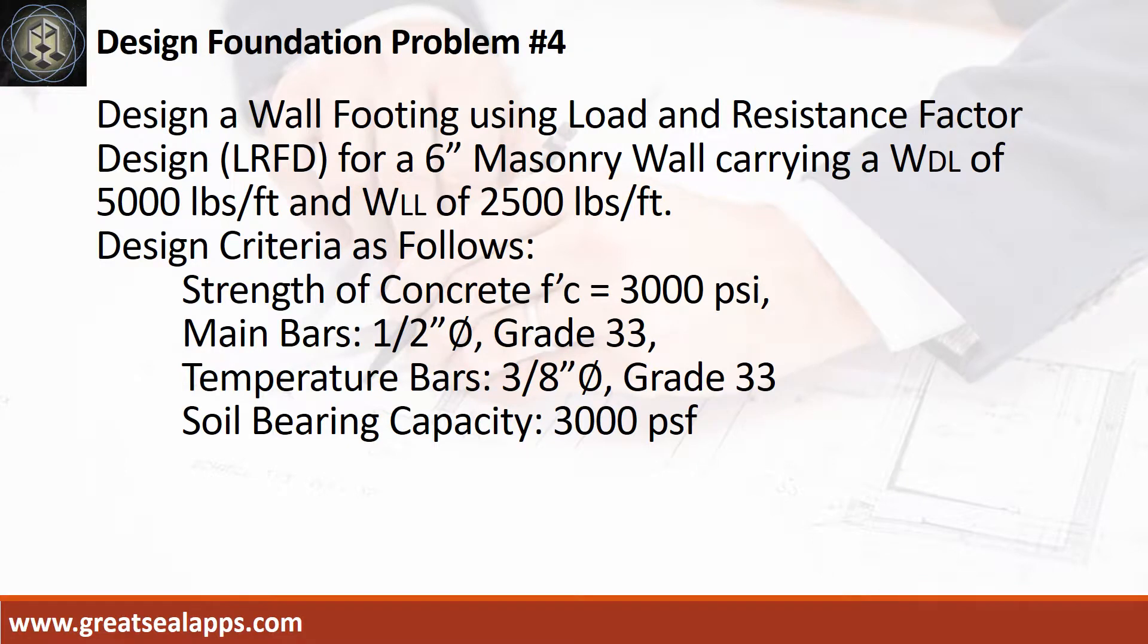Design a wall footing using load and resistance factor design for a 6-inch masonry wall carrying a uniform dead load of 5,000 pounds per foot and uniform live load of 2,500 pounds per foot. Design criteria as follows: Strength of concrete, 3,000 PSI. Main bars, 1/2-inch diameter, grade 33.